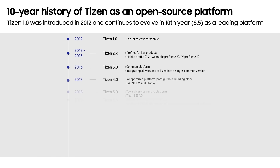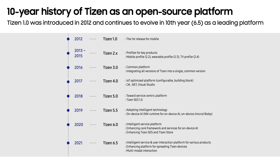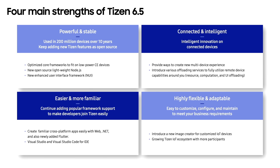Ever since its inception, Tizen has consistently evolved in order to adopt diverse devices over a decade. I will explain four main strengths of Tizen 6.5. First and foremost, Tizen 6.5 is a powerful and stable platform. After being applied to a host of products, enhancing features and modifying errors for a decade, all those efforts enabled Tizen to be a highly stable platform. Furthermore, Tizen 6.5 achieved connecting more devices and creating intelligent services. New multi-device experience frameworks are introduced in Tizen 6.5.